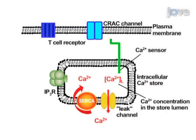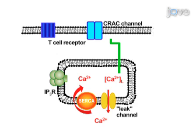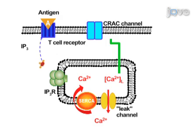Calcium release activated calcium channels, or CRAC channels, located in the plasma membrane play an important role in T cell proliferation and gene expression. Stimulation of T cell receptors with an antigen results in formation of the second messenger inositol triphosphate and activation of calcium release from the store via inositol triphosphate receptors.